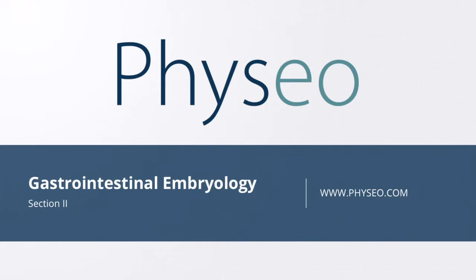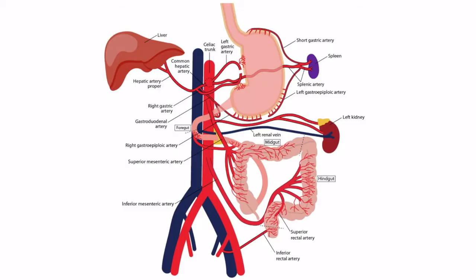Welcome to section 2 of gastrointestinal embryology. In this section, we'll be discussing embryo-related pathology associated with the foregut and the hindgut. This image shows the entire GI tract, and many pathologies can occur during embryogenesis at any part along the GI tract. This lecture will be focused on those pathologies related to the foregut and the hindgut. Pathology associated with the midgut and intestinal atresia will be discussed in the following section.